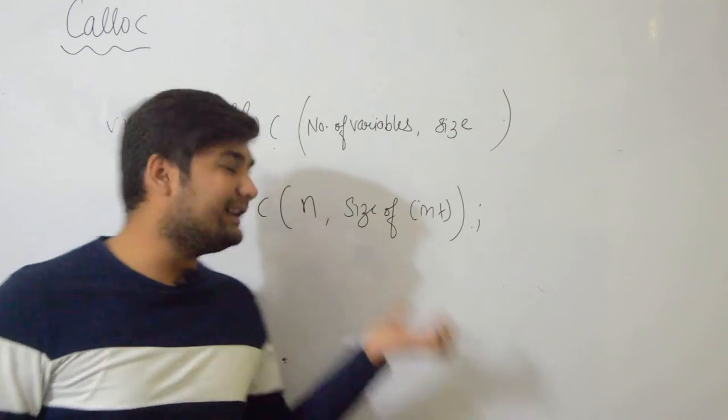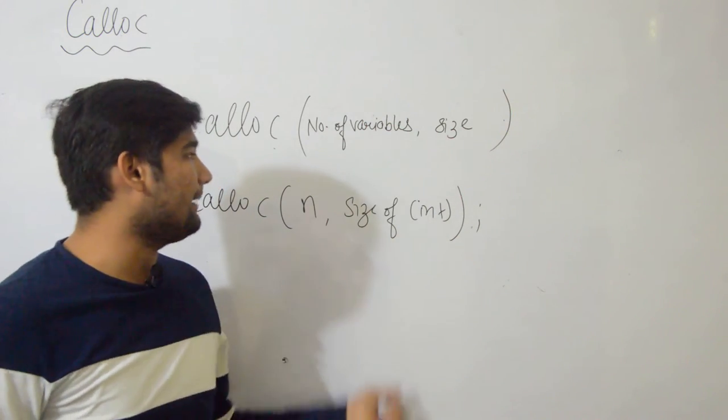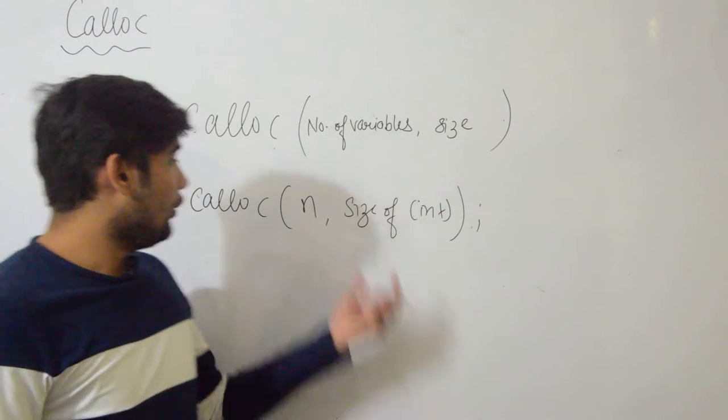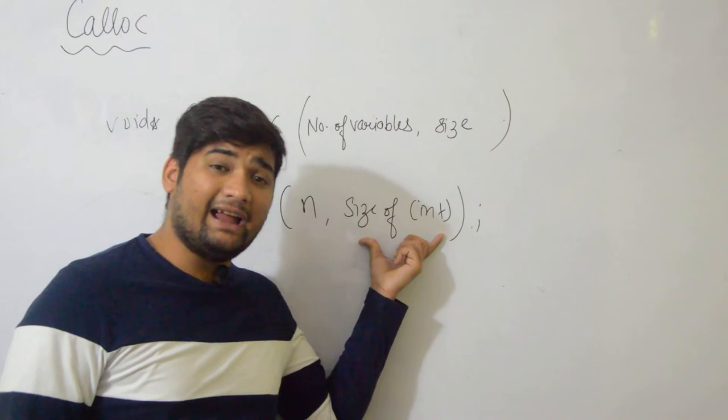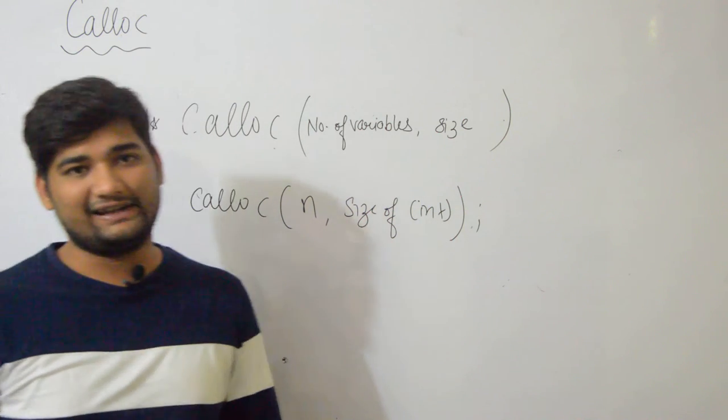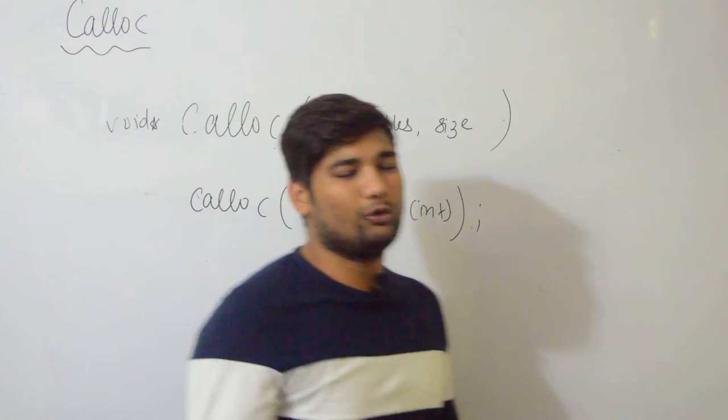What you write as multiply, you write with comma instead. First you give how many variables to store - n variables - and what size is each variable, that is sizeof int, meaning 4 bytes or 2 bytes each.